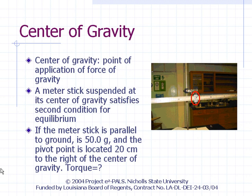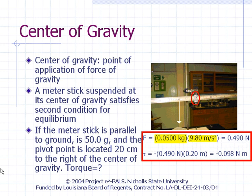Suppose the meter stick shown here is parallel to the ground, has a mass of 50 grams, and the pivot point is located 20 centimeters right of the center of gravity. What is the torque and how would the stick rotate? The moment arm is 20 centimeters. Since the pivot point is 20 centimeters right of the center of gravity, the force of gravity is applied 20 centimeters left of the pivot point. Multiplying the force by the moment arm of 20 centimeters gives a torque of negative 0.098 newton meters. The torque is negative because it will make the stick rotate counterclockwise.